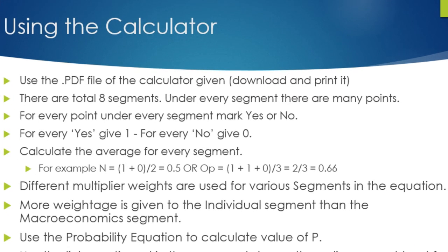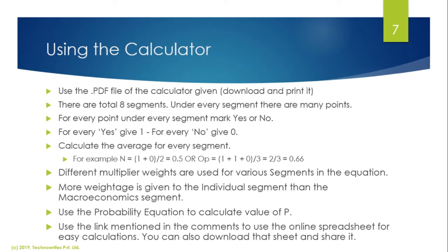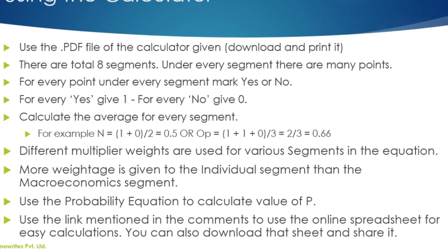For example, for the factors coming under N, which is the national or macroeconomic level, if your rating is 1 plus 0, then divide that by 2, which gives you the value 0.5. Or at the organizational positive factors level, if your rating is 1 plus 1 plus 0 divided by 3, that equals 0.66. Once you have got all the averages worked out for all the sectors, you have to multiply them by some multiplier weights that I have assigned to every segment. These multiplier weights are mentioned very clearly in the equation written in the PDF file. More weightage is given to the factors at the individual segment than at the macroeconomic segment. Use the probability equation to calculate the value of p, which is nothing more than a multiplication and an addition.